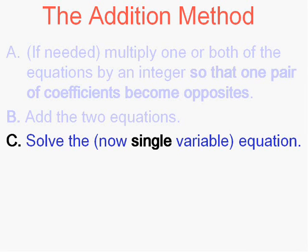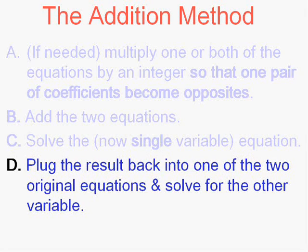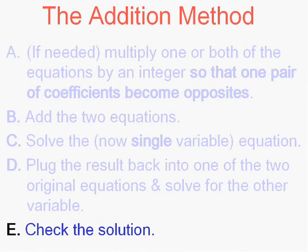Now we're back to what we had with substitution. We'll solve that single variable equation, take the value that it's equal to and, as in the second half of substitution, substitute it in and find the other variable and then of course, as always, we'll check the solution in both equations.